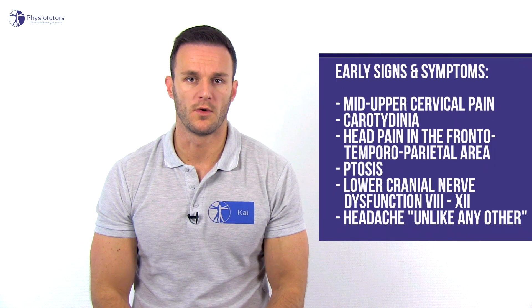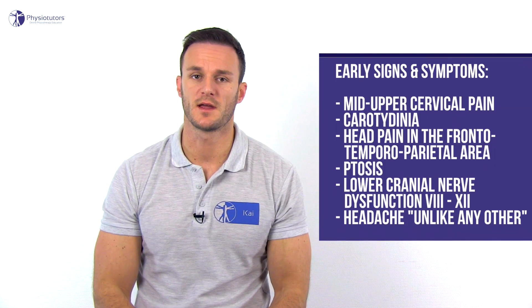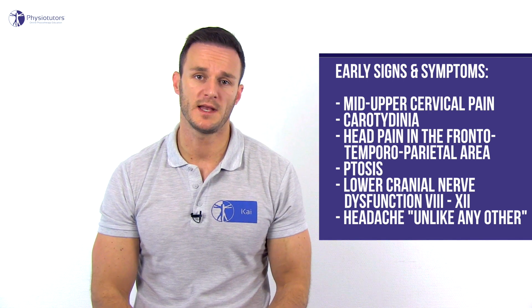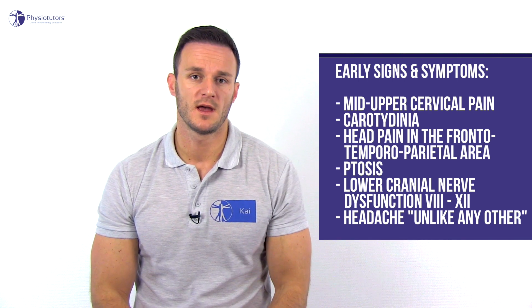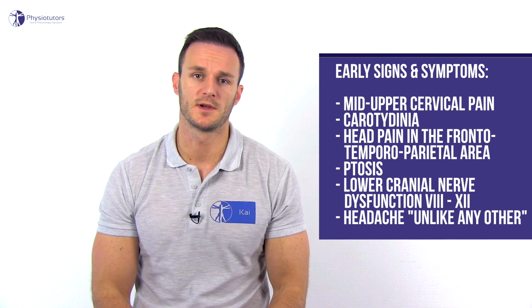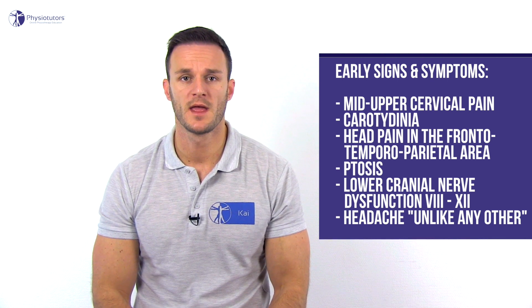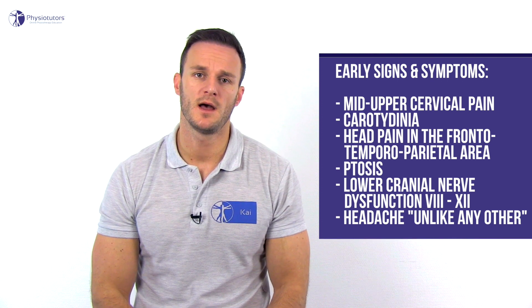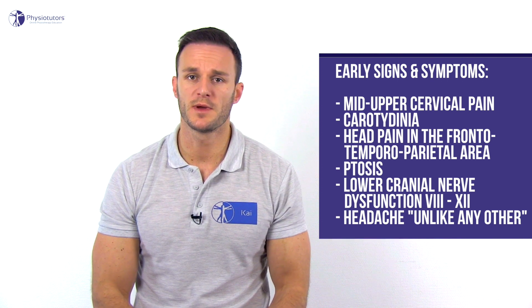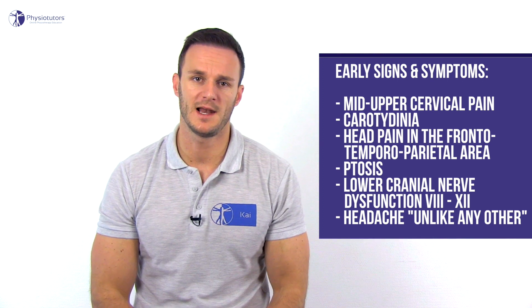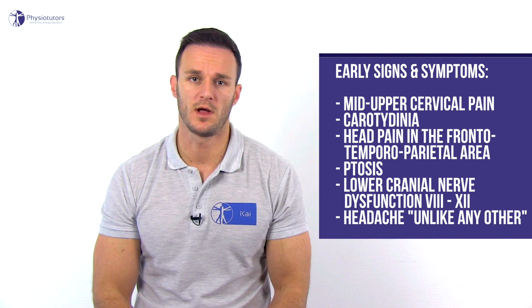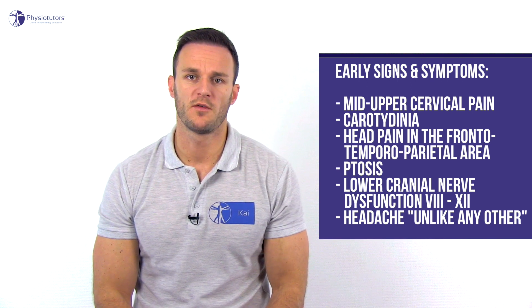Early symptoms that you need to look for during your patient history taking and physical assessment include mid-upper cervical pain, pain around the ear and the jaw, and tenderness of the carotid artery also called carotidinia, head pain in the frontotemporal parietal area, ptosis which is a drooping or falling of the upper eyelid, lower cranial nerve dysfunction of the nerves 8 through 12, and acute onset of pain described unlike any other.